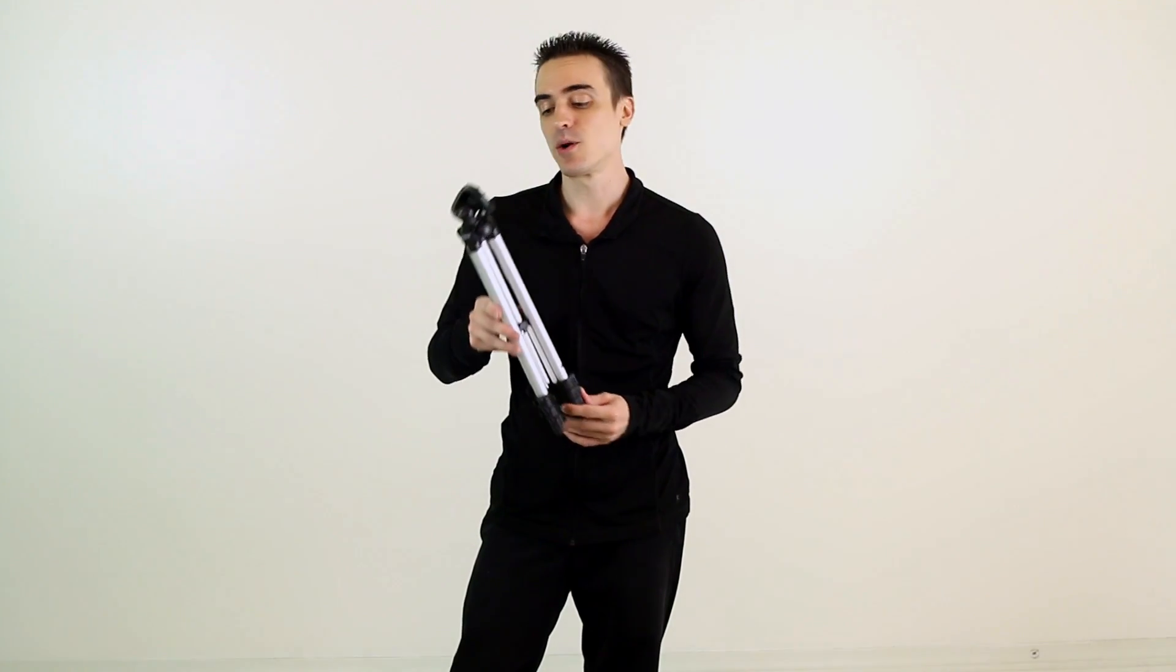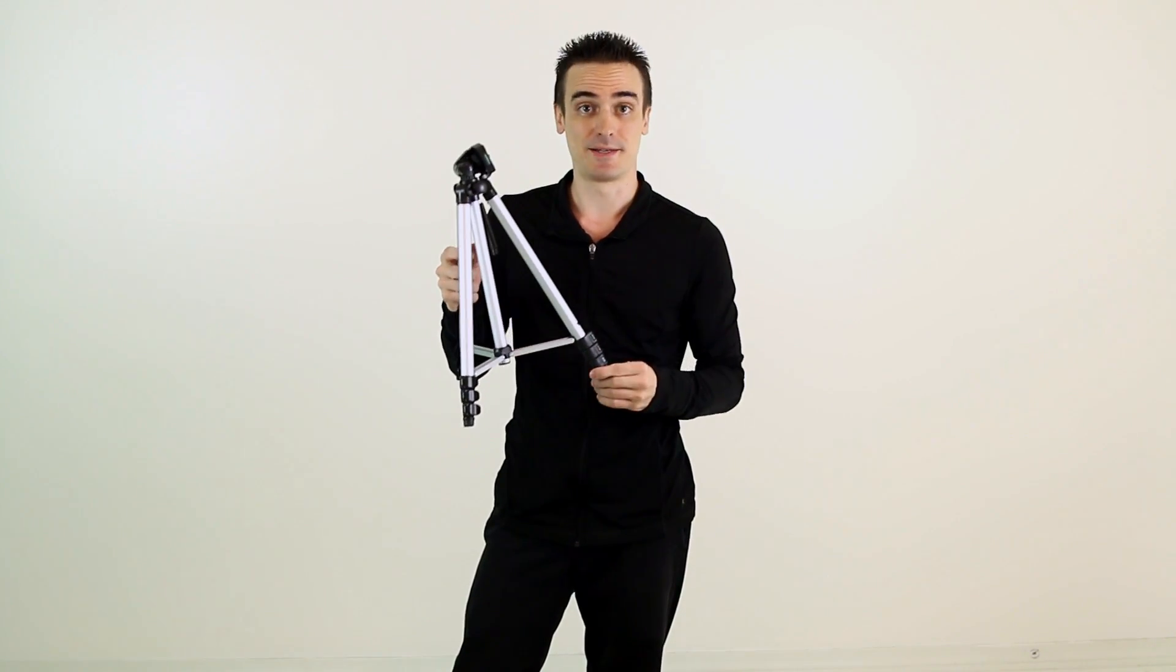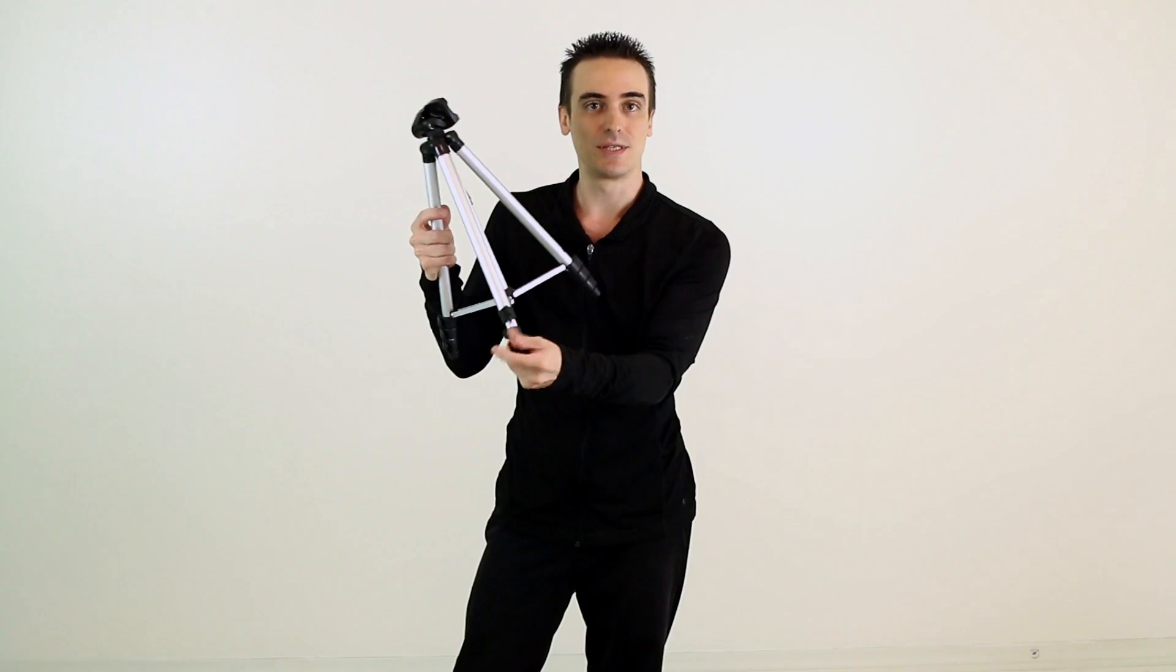Once you've got your tripod, you're going to want to spread the legs apart and then grab the middle bracket and push it down into place like this. Then take all of your clamps here and release them to extend the legs down.